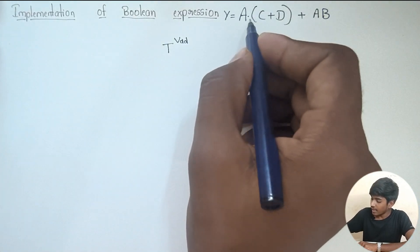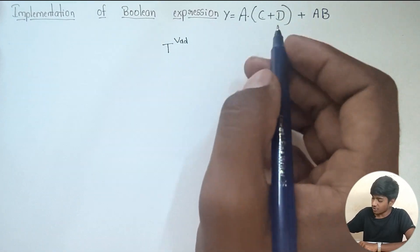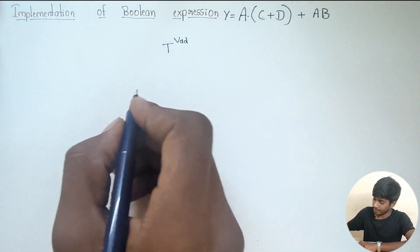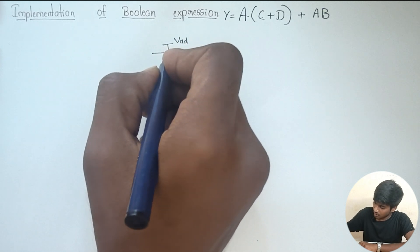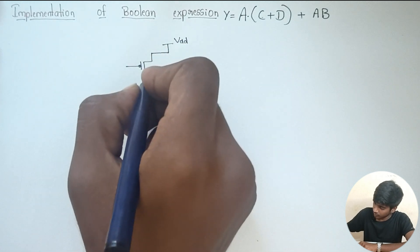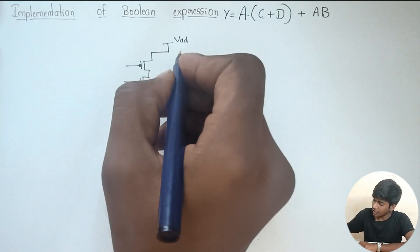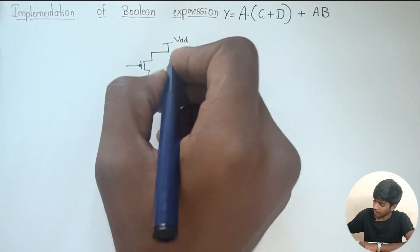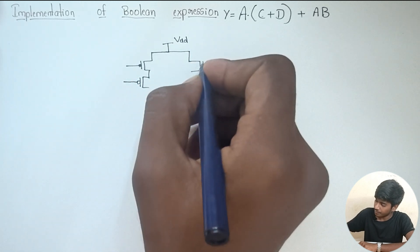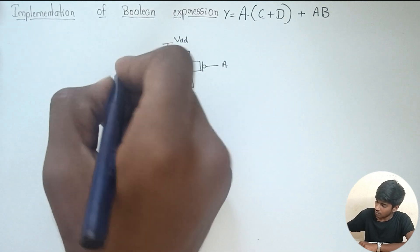Keeping that in mind, here C plus D are in addition operation, so for PMOS C and D should be in series, and these two are in parallel — that is A should be in parallel with C and D.